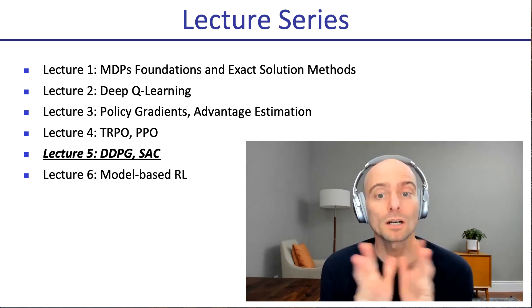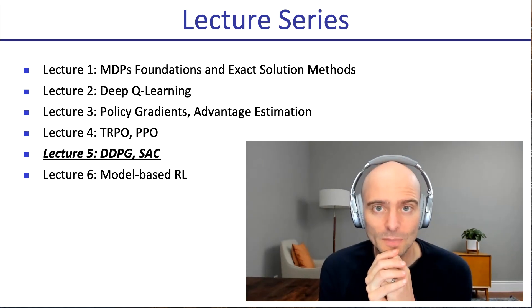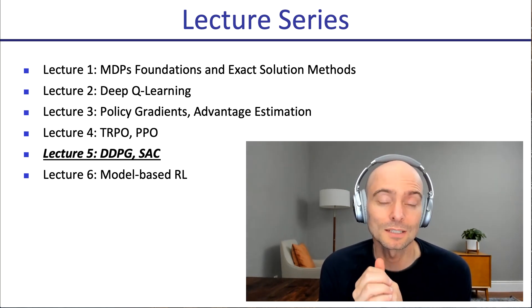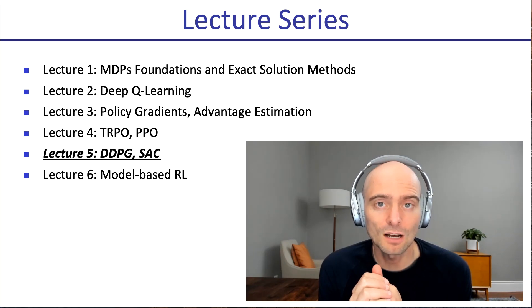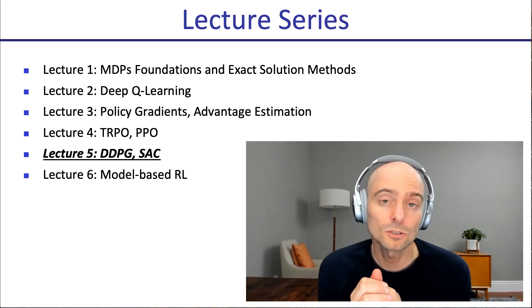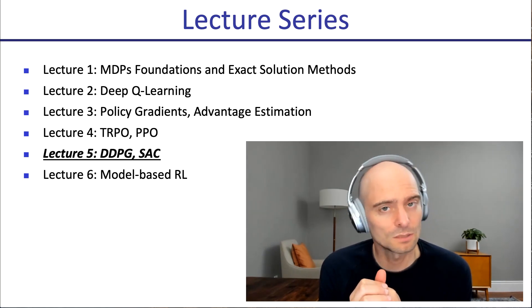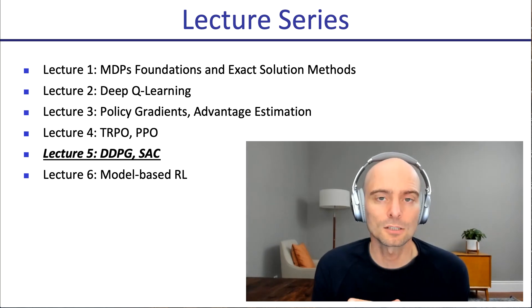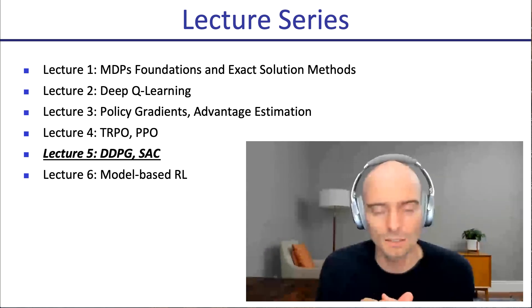We've looked at what are MDPs and exact solution methods, which apply to small MDPs but not large ones that we typically want to solve. We'll look at deep Q learning, which can solve larger MDPs. It's an off-policy method, which makes it quite data efficient. It can also introduce instabilities at times, which can be a downside in terms of the amount of tuning involved, but these days people can get it to work really well on a wide range of problems.